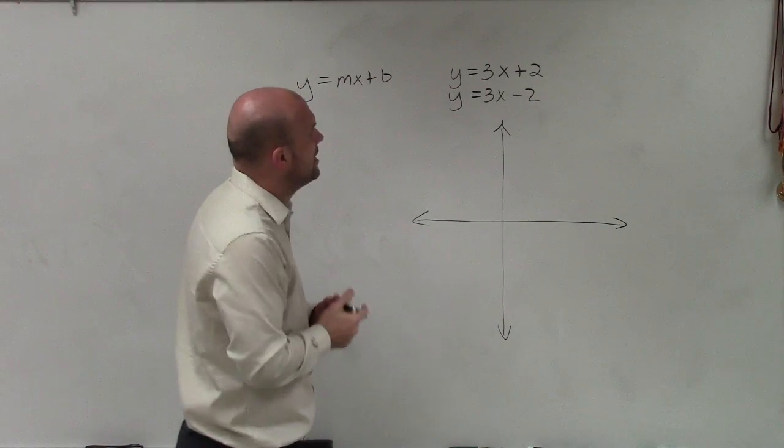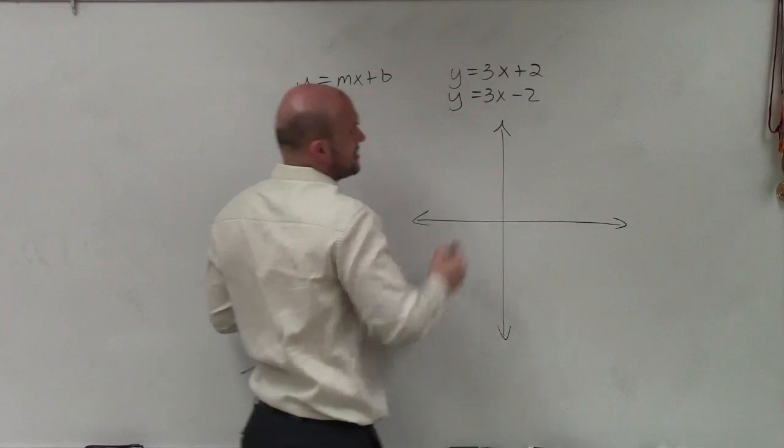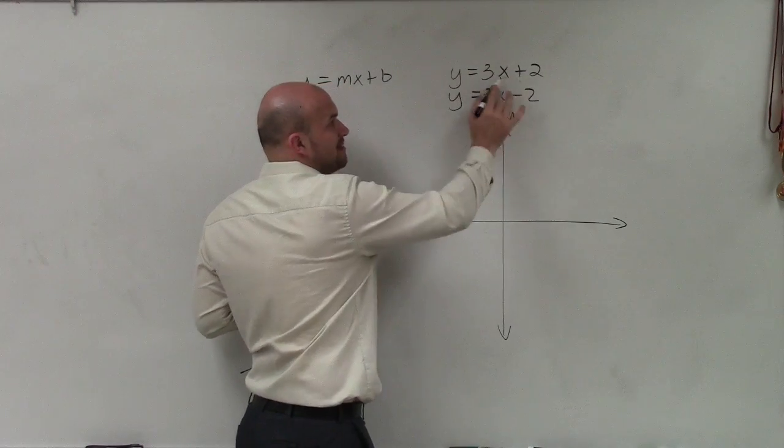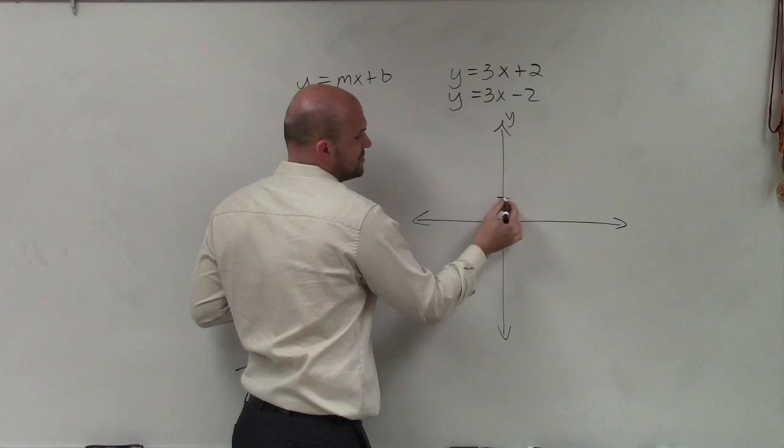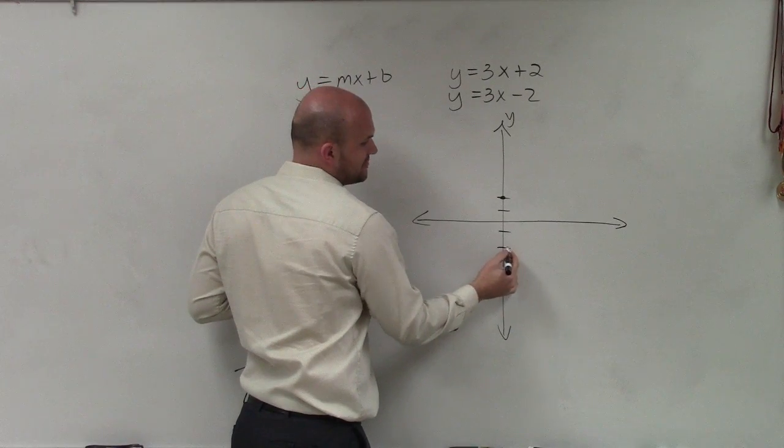And when doing that, remember, this represents our y-intercept, where the graph is going to cross the y-axis. So my first equation, I'm going to go up to positive 2. Second equation, I'll go down to negative 2.